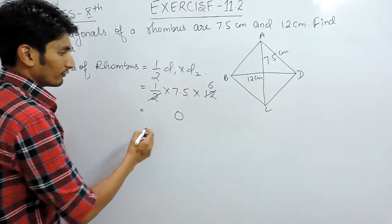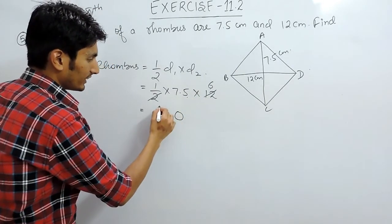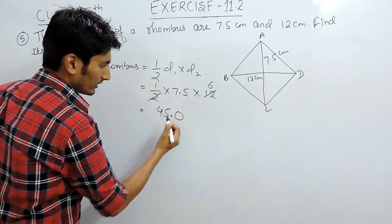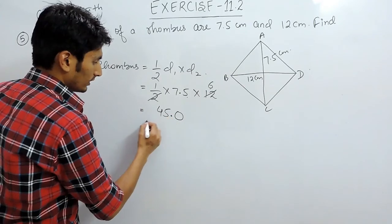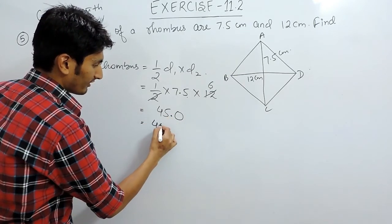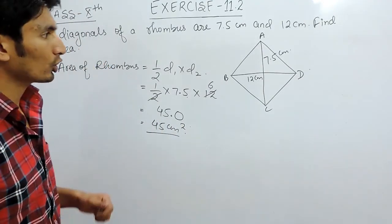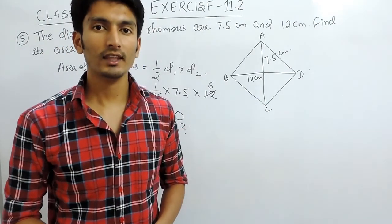6 into 7 is 42, and carry 3 which is 45. There is one decimal so we will put it here. So the area will be 45 cm². This should be the area for this rhombus. Thank you.